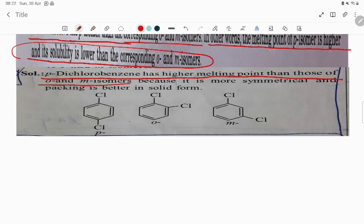Para dichlorobenzene has higher melting point than those of the ortho and meta isomers because it is more symmetrical and packing is better in solid form. So you see, student, this structure can be packed very easily compared to this structure. This structure cannot be packed.